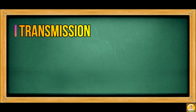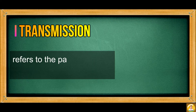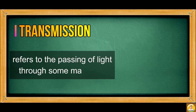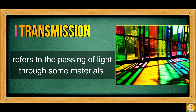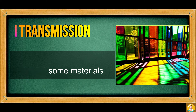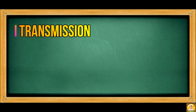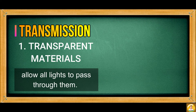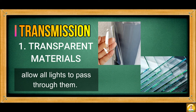Transmission refers to the passing of light through some materials. For example, when light passes through a glass window, it is transmitted to the other side. Different materials have different ways of transmitting light. Transparent materials allow all light to pass through them — clear plastic and glass windows are examples of transparent objects.